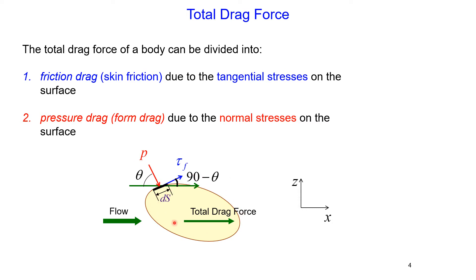To obtain the total drag force, we need to integrate over the whole surface area of an object and add those forces by taking the projection of each component onto the same direction as the direction of the flow. Here, ds is an elementary surface area on the surface of the object.